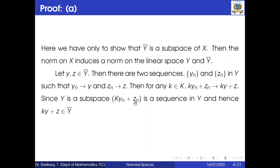Since Y is a subspace, k·y_n + z_n is a sequence in Y, and hence k·y + z belongs to the closure of Y. This shows that Y-bar is a subspace of X. This is the proof of the first part.